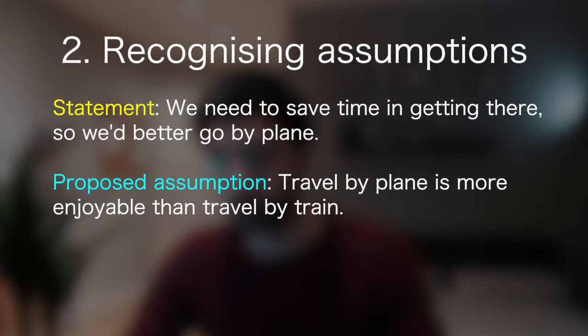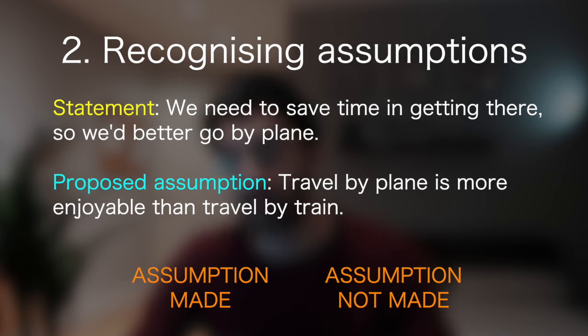Another example could be that same statement, but the proposed assumption is that travel by plane is more enjoyable than travel by train. Going through the same process, your friend said: we need to save time in getting there, so we'd better go by plane. And then you, trying to prove them wrong, said: yeah, but you've assumed that travel by plane is more enjoyable than travel by train. You can see in that case you wouldn't have won the argument because your friend hasn't said anything about which one's more enjoyable — they've just spoken about which one's quickest. So because you would have lost the argument, you know that the assumption was not made.